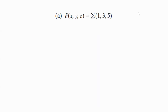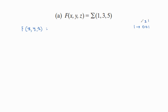Now let us start with the first equation: f(x, y, z) = Σ(1, 3, 5). To write in canonical form we have to expand the given boolean expression with the help of the input variables. Here 1 means the equivalent binary is 0, 0, 1 — because there are 3 input variables, so 3 bits are required, based on binary weights 2⁰, 2¹, 2². For 3, the equivalent binary is 0, 1, 1. For 5, the equivalent binary is 1, 0, 1.